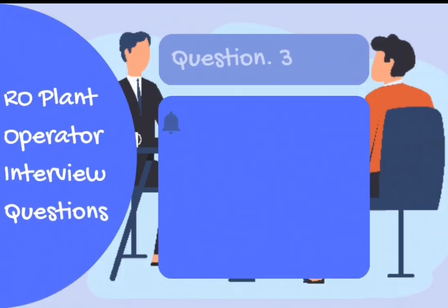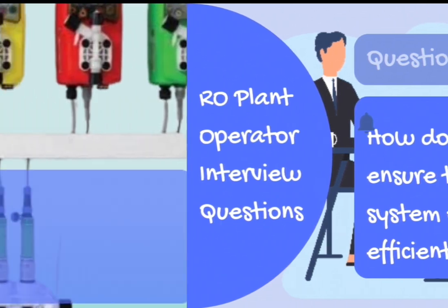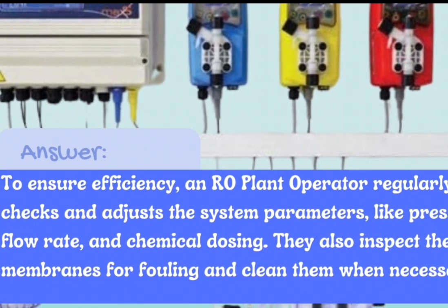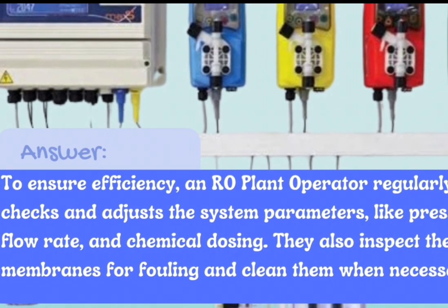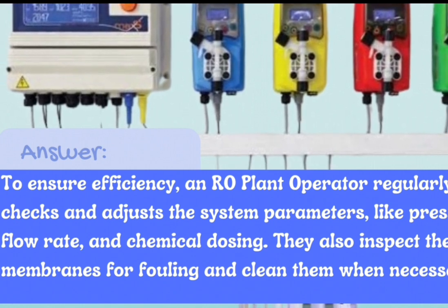Question number 3: How do you ensure the RO system operates efficiently? Answer: To ensure efficiency, an RO plant operator regularly checks and adjusts the system parameters like pressure, flow rate, and chemical dosing. They also inspect the membranes for fouling and clean them when necessary.